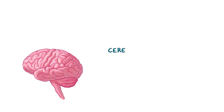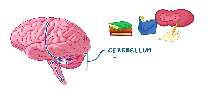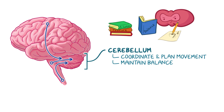The cerebellum sits at the back of the skull, posterior to the brainstem. Neurons send their axons carrying input from the spinal cord, the brain, and the internal ear through the brainstem into the cerebellum. Once there, the cerebellum uses this information to coordinate and plan movement, as well as maintain balance.